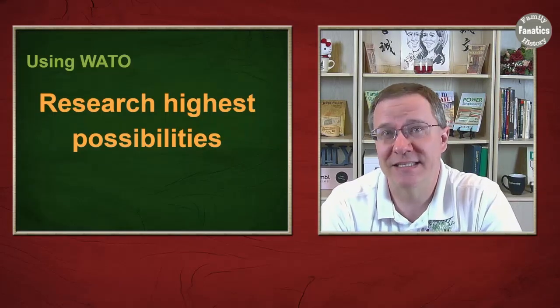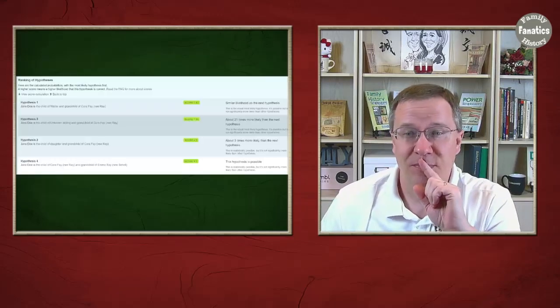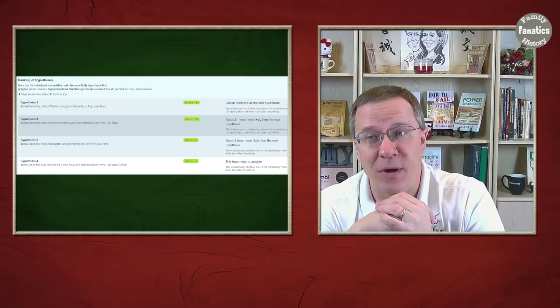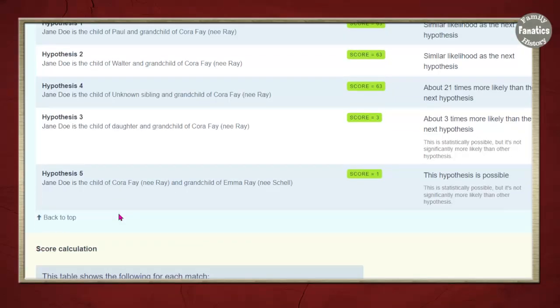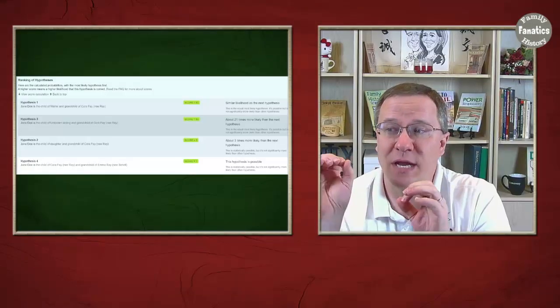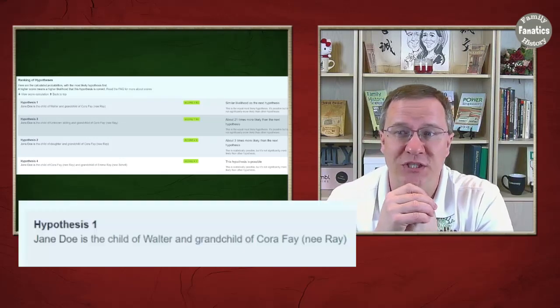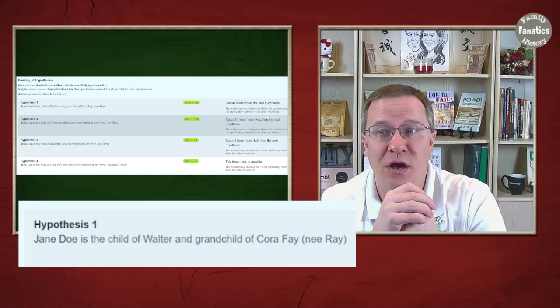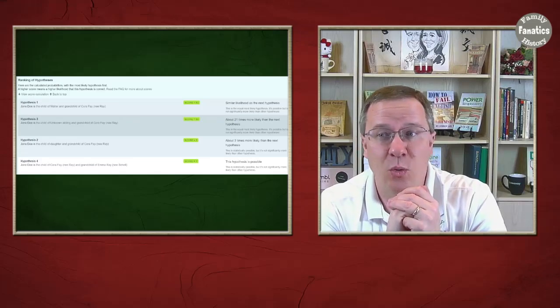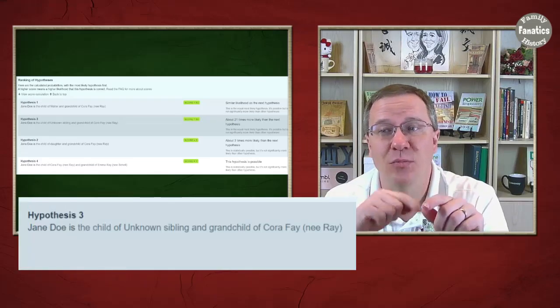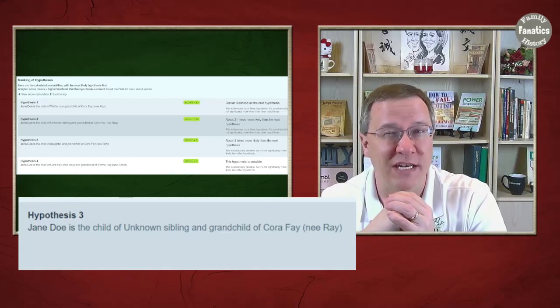That goes to our next step, which is we want to research the highest possibilities. Let's pull up these hypotheses here. These hypotheses can be found by just scrolling down on the page. First off we have hypothesis one, which is that Jane Doe is the child of Walter and the grandchild of Cora Fae. We also have hypothesis three, which Jane Doe is a child of an unknown sibling and the grandchild of Cora Fae. You notice there they're still both the grandchild of Cora Fae. The score on both of these is 63.